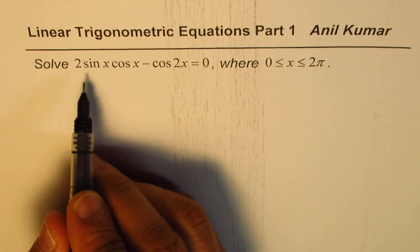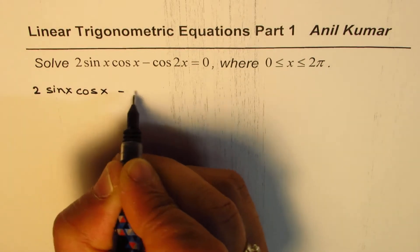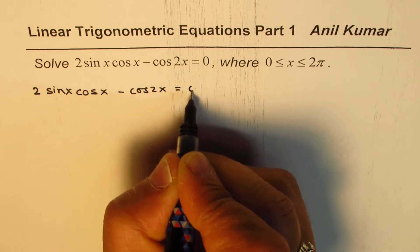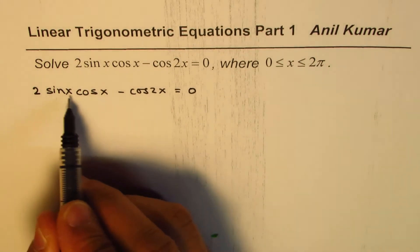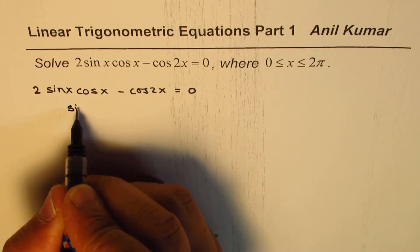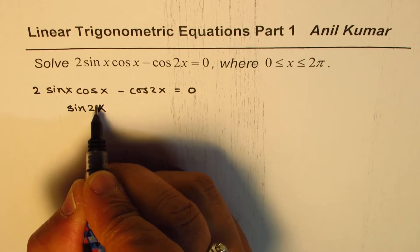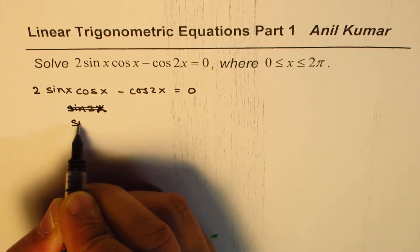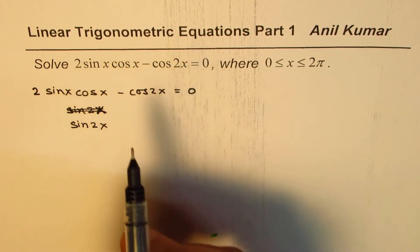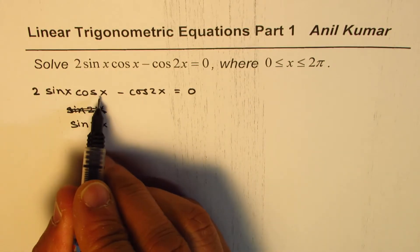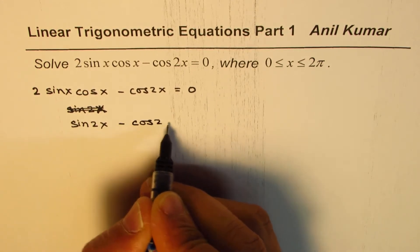So we have the equation 2 sin x cos x minus cos 2x = 0. Now, some of you who remember the identities: 2 sin x cos x can be written as sin 2x. So I could write this as sin 2x minus cos 2x = 0.